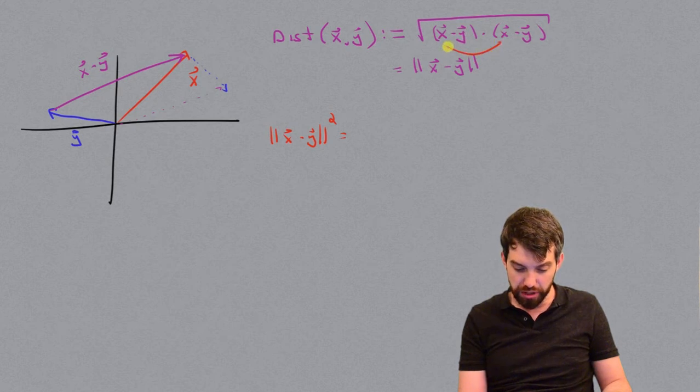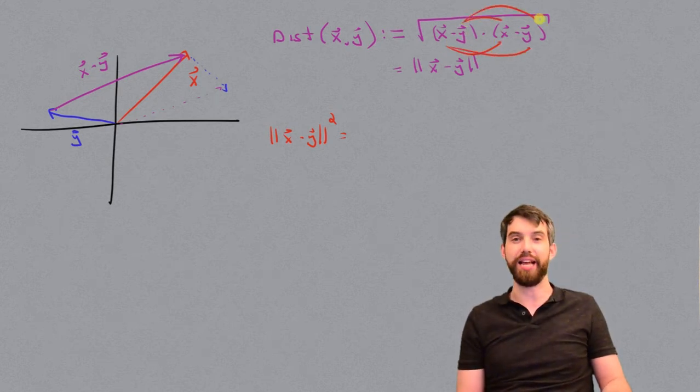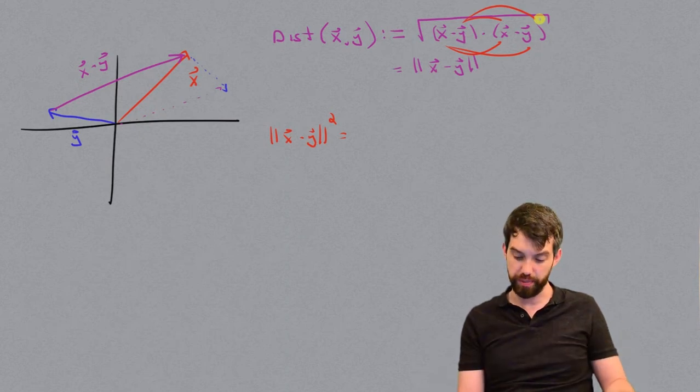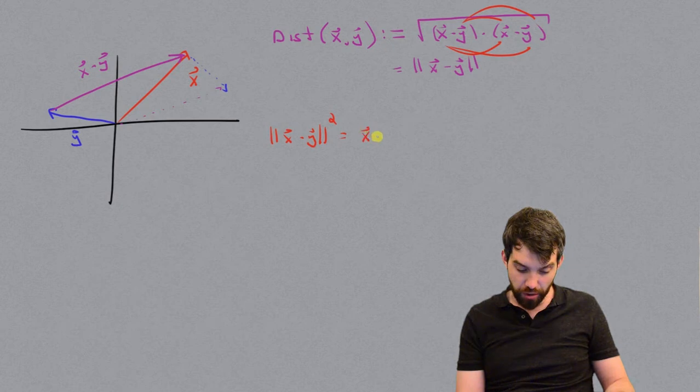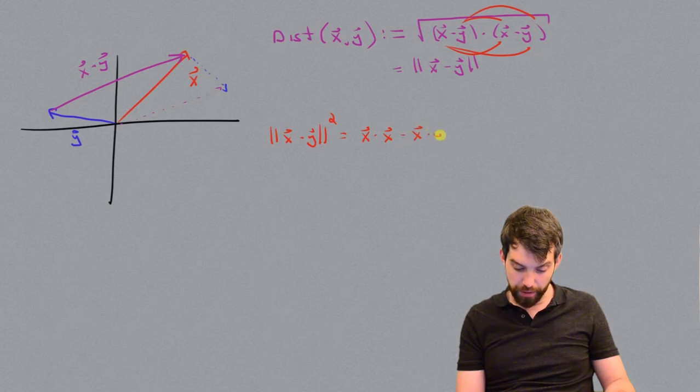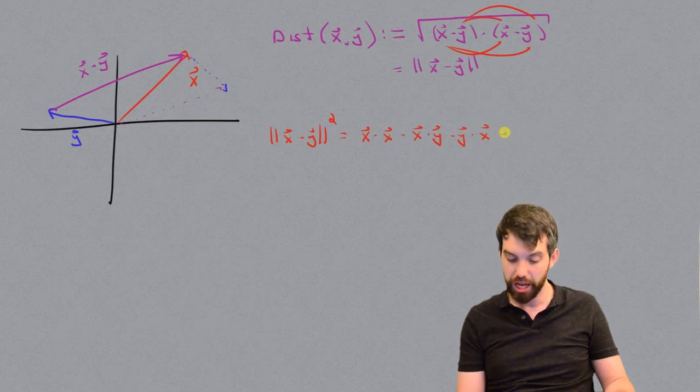So this is the first and the first, the first and the second, the second and the first, and the second and the second. That's how I would FOIL this particular expression. So I'm going to say that this is vector x dotted with vector x, minus vector x dotted with vector y, minus vector y dotted with vector x, and then finally, minus minus is a plus, plus vector y dotted with vector y.